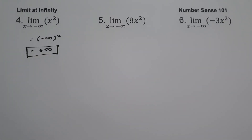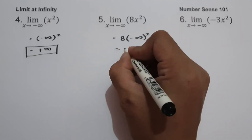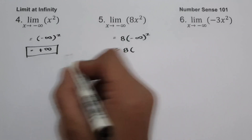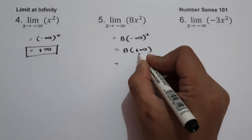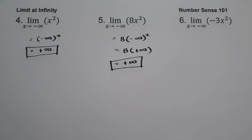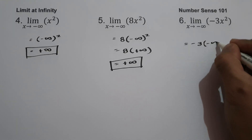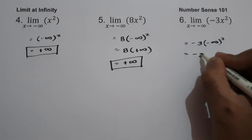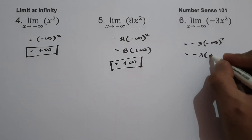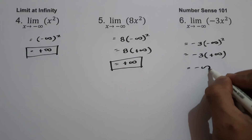For number 5, the limit of 8x squared as x approaches negative infinity. We have 8 multiplied by negative infinity squared. Negative infinity raised to 2 is positive infinity, and 8 times positive infinity is still positive infinity. On number 6, the limit of negative 3x squared as x approaches negative infinity gives us negative 3 times positive infinity, which is negative infinity.